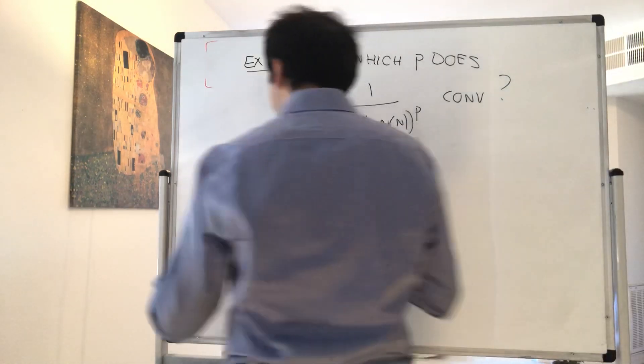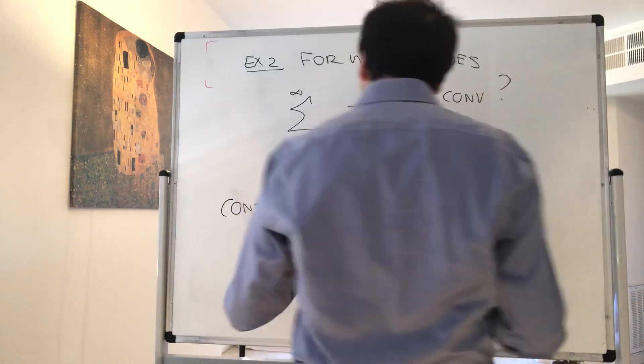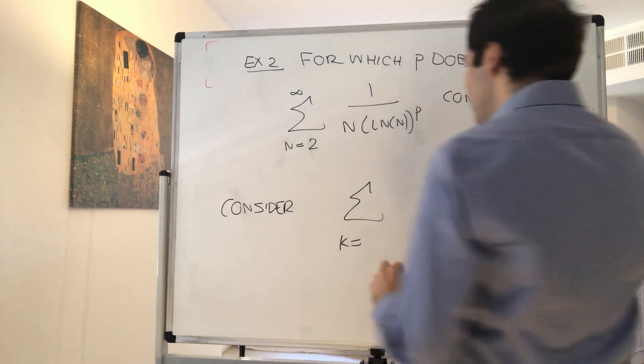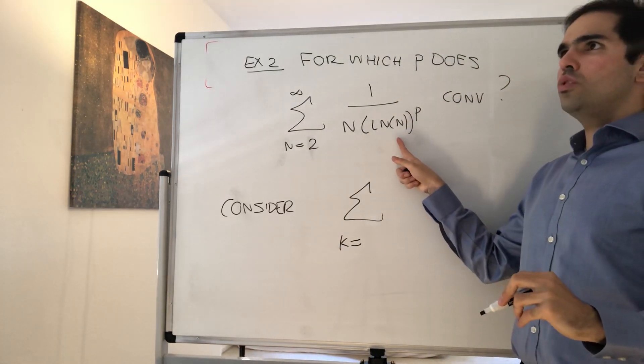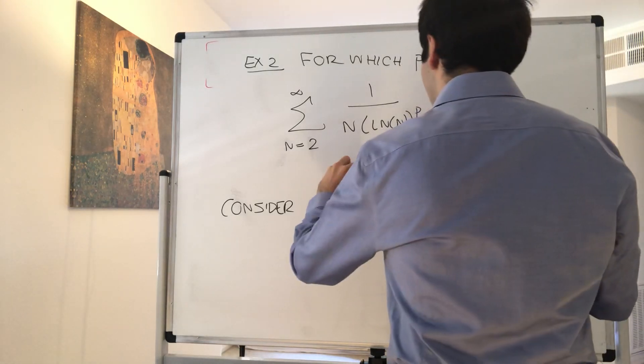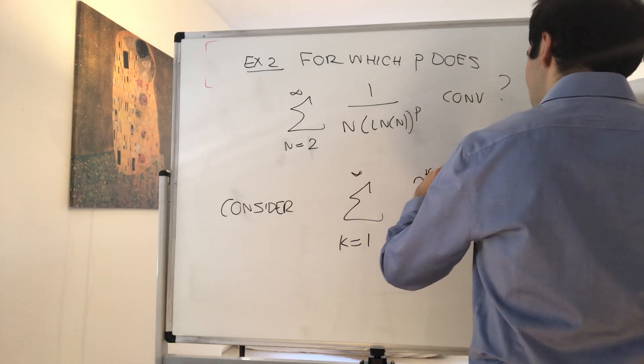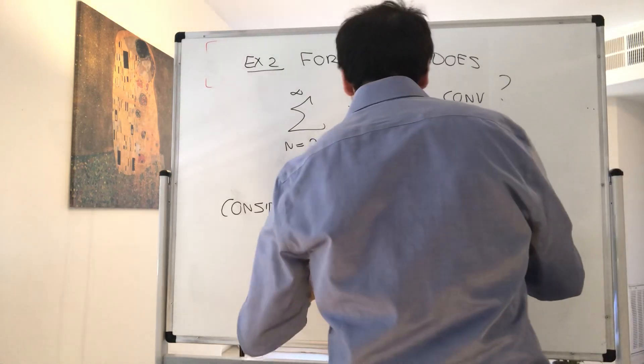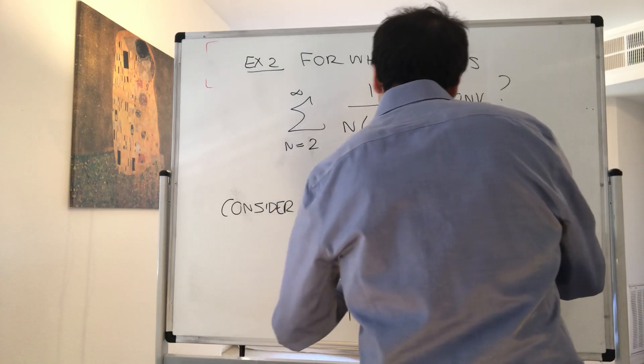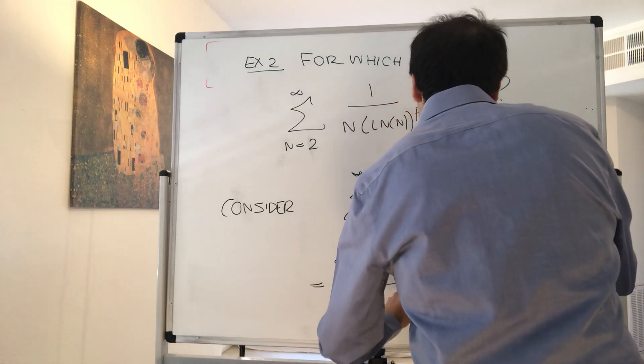Well, all we need to do is check, test for the following. So consider the following, so the sum from this time, well, because it starts at 2, think 2^what equals 2, well, 2^1 equals 2. So, this starts from 1 to infinity of, let's see, 2^k times a_(2^k), which now becomes the sum from k from 1 to infinity of 2^k over (2^k times ln(2^k))^p.